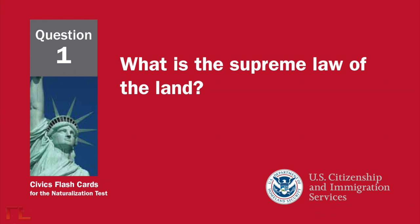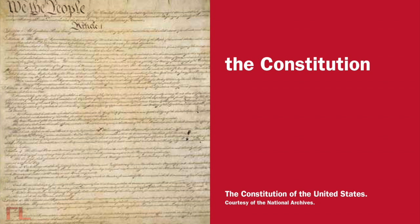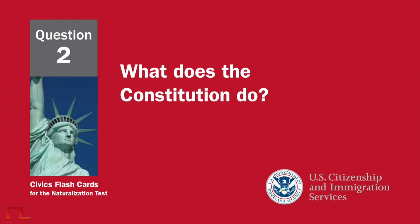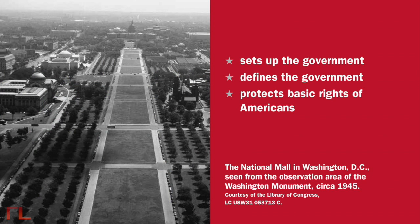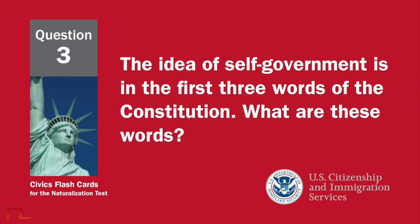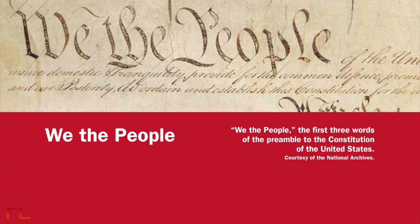What is the supreme law of the land? The Constitution. What does the Constitution do? It sets up the government, defines the government, and protects the basic rights of Americans. The idea of self-government is in the first three words of the Constitution. What are these words? We the People.